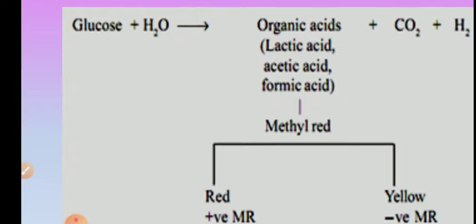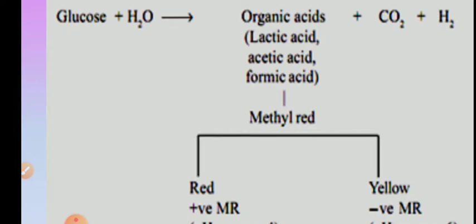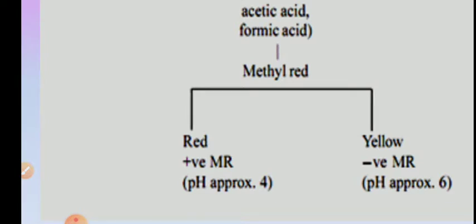Glucose present in the medium is utilized by the organism through mixed acid fermentation, producing a number of acids. MR-positive organisms ferment the carbohydrate glucose and produce mixed acids — this is called mixed acid fermentation. Organic acids such as formic acid and acetic acid are produced, along with CO2 and H2 gas. Because these mixed acids are produced, the pH of the medium drops down. Initially the pH is 7 to 7.5; if the organism carries out mixed acid fermentation, a number of acids are produced and the pH shifts towards 4 to 4.5. When methyl red indicator is added, bright red color appears because of the acid production.